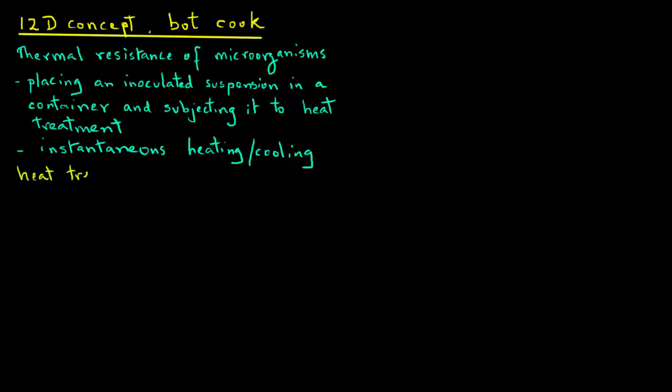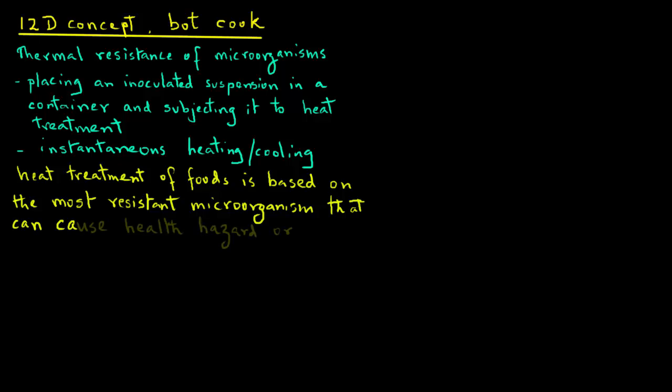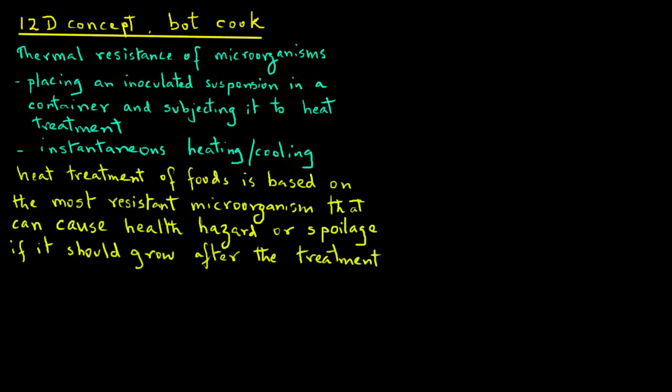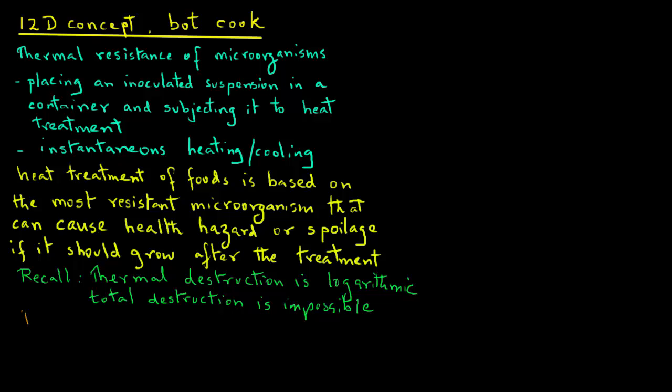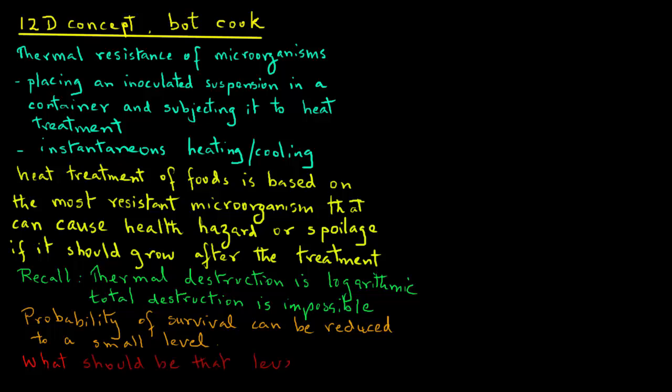A heat treatment of a food is based on the most resistant microorganism that can cause health hazard or a microorganism that can cause spoilage if those microorganisms grow after the thermal treatment. Now, recall that the thermal destruction for most microbial populations is described with a logarithmic relationship, and total destruction of a microorganism then is not possible. So we work with probability of survival. The probability of survival can be reduced to a very small number. Of course, then the question is, what should be that level?